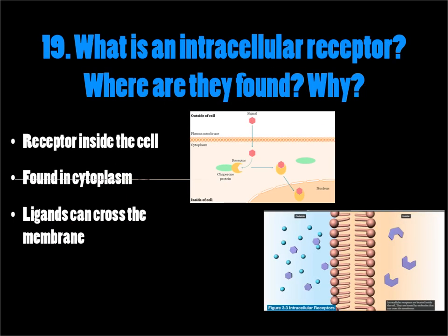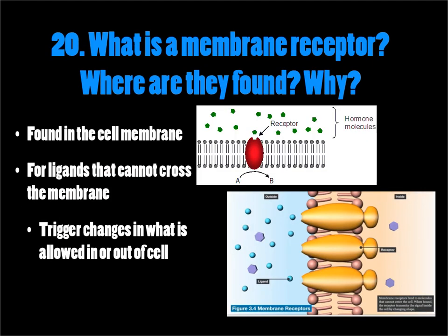What is an intracellular receptor and where are they found and why? The receptor is inside the cell, found in the cytoplasm. The ligand — the signal molecule — can actually cross the cell membrane and get into the cell and bond to the receptor inside the cytoplasm. What is a membrane receptor and where are they found? Membrane receptors are found in the cell membrane, literally embedded between the layers of the lipid bilayer. These are used for ligands or signal molecules that are too big, too charged, or otherwise unable to pass through the cell membrane. They trigger changes as to what is allowed in or out of the cell — the ligand binds and sets up a response inside the cell.